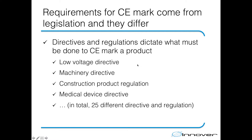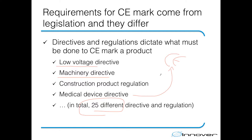Even though the CE marking symbol is the same with every product — it can be found on toys, lifts, escalators, cell phones, computers and so on — how you get there if you are a manufacturer of low voltage products, machinery, or medical devices varies quite a lot. The variation is due to the legislation that must be used to CE mark the product. For example, we have the low voltage directive and the machinery directive, each dictating how you must CE mark that product. In total we have 25 different laws and regulations, each telling a different story on how you can get there even though the goal is the same.